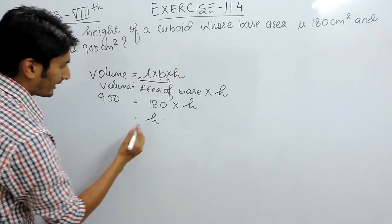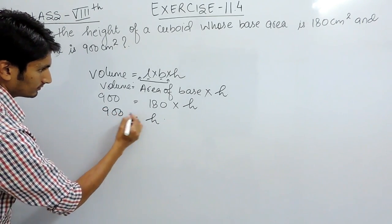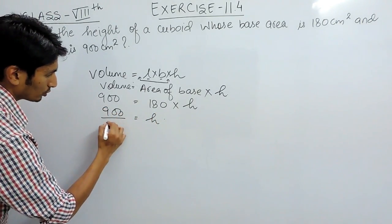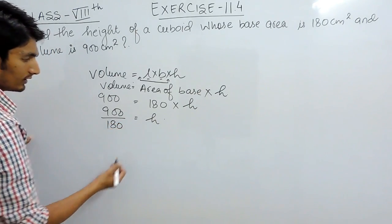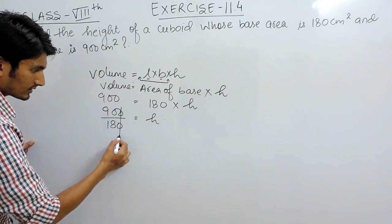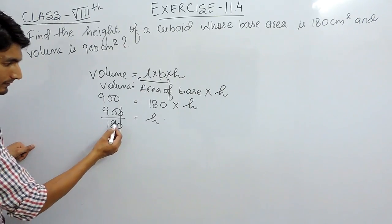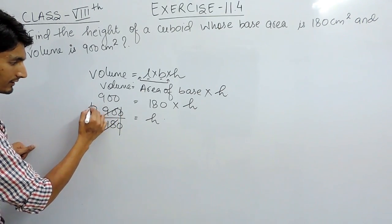So if you want to find height, I can take 180 to this side, so here it should divide 900. This is 0 times and this can be cancelled 5 times.